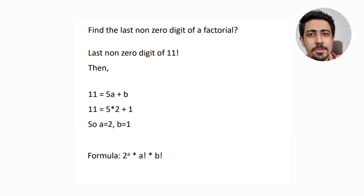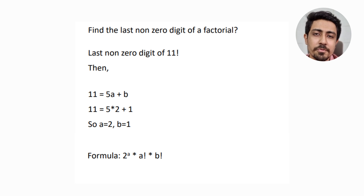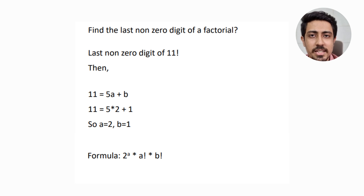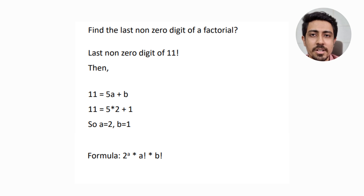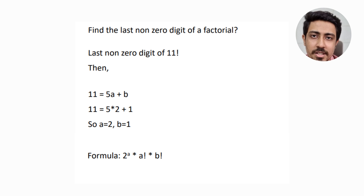In number systems, a typical problem is: find the last non-zero digit of a factorial. For 11 factorial, write 11 in the form 5a + b: 5×2 + 1, so a = 2, b = 1. The last non-zero digit is 2^a × a! × b! = 2² × 2! × 1! = 8. You can try this for 21 factorial and check.